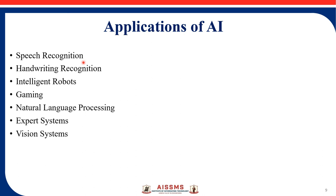Handwriting recognition — software reads text written on paper by a pen or on a screen, recognizes the shapes of letters, and converts them into editable text. Intelligent robots are able to perform tasks given by humans. Gaming is another application, such as tic-tac-toe or chess games.